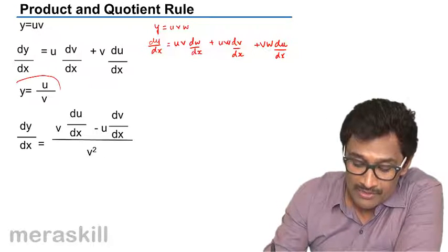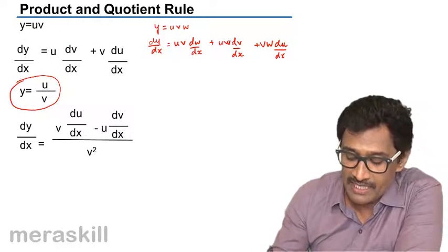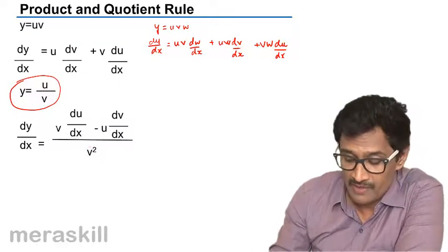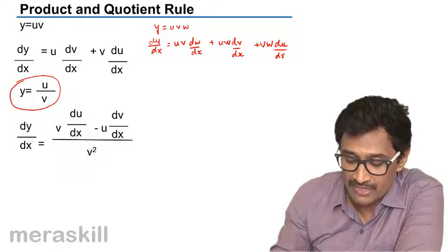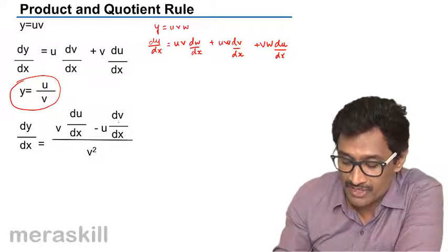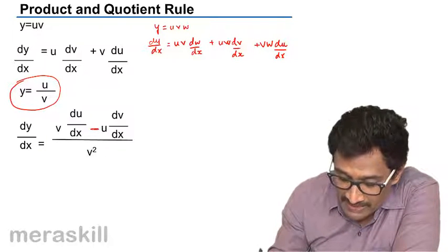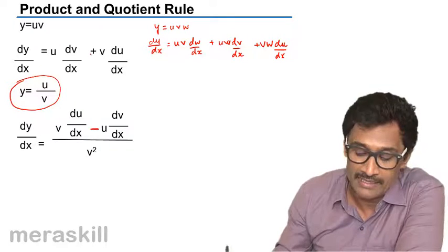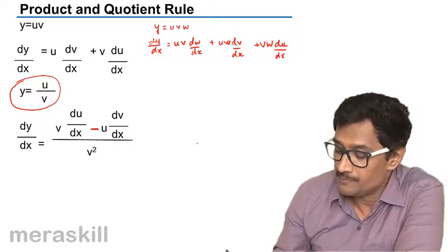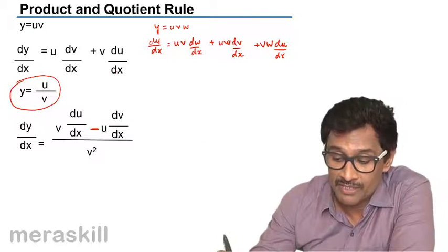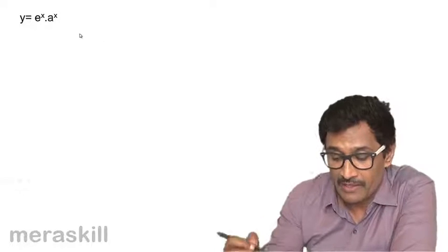On the contrary, for the quotient rule, if y = u/v, then dy/dx equals, over the square of the denominator: the denominator into the derivative of the numerator, minus the numerator into the derivative of the denominator. Remember, it's a minus sign here. These two rules are very important and we use them often. Now let's see how to apply them.